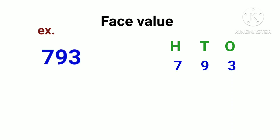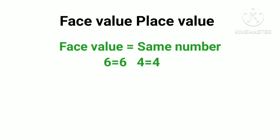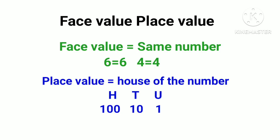793: 7's face value is 7, 9's face value is 9, and 3's face value is 3. Understood? So face value means the number itself, and place value means the value of the digit according to its position — which house it is in.